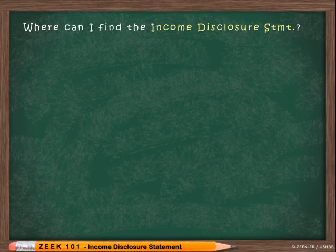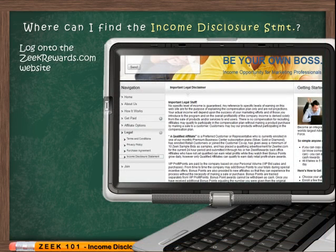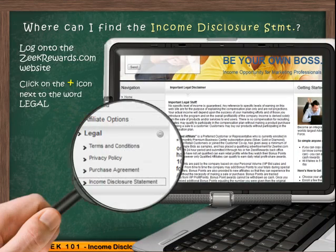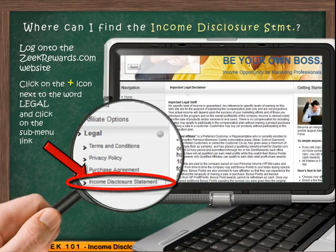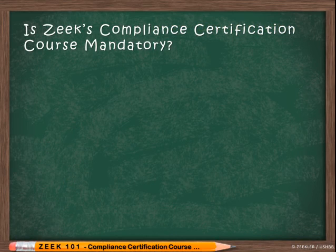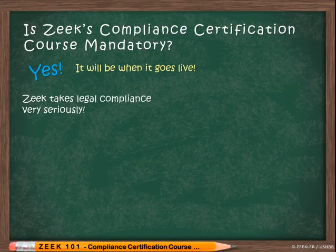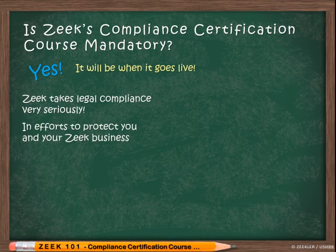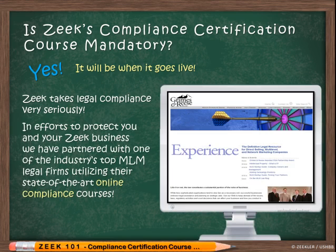To locate Zeek's Income and Disclosure Statement, simply log on to the ZeekRewards.com website, click on the plus icon next to the word 'Legal,' and then click on the submenu link 'Income Disclosure Statement.' Zeek's Compliance Certification course is mandatory — at least it will be when it goes live. Zeek takes legal compliance very seriously, so in efforts to protect you and your Zeek Rewards business, we have partnered with one of the industry's top legal firms utilizing their state-of-the-art online compliance courses.